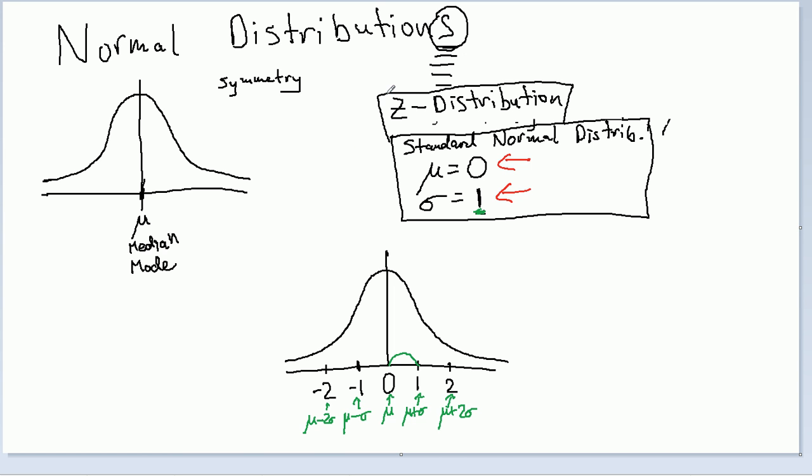So, that's why we also call the Z distribution. Remember the Z formula? Z equals x minus mu over sigma. So, take any one of these as your x. So, I selected 1. Minus mu, which is 0, over sigma, which is 1. You'll get 1 over 1, which is 1. And that's how I get 1 here. So, this is the Z distribution. This is a very important distribution. It's the standard normal distribution.